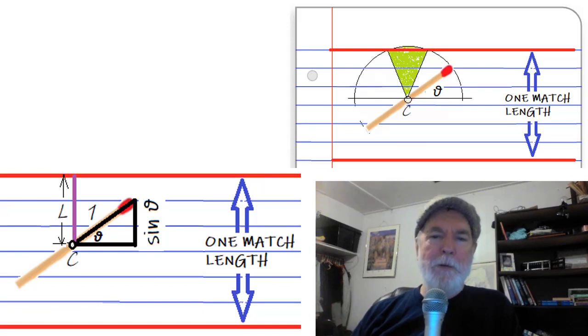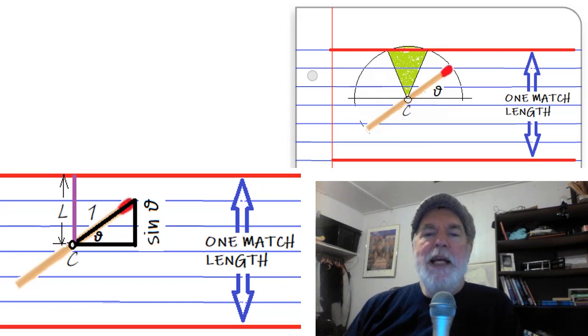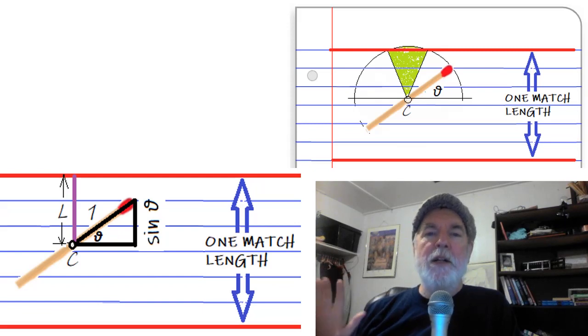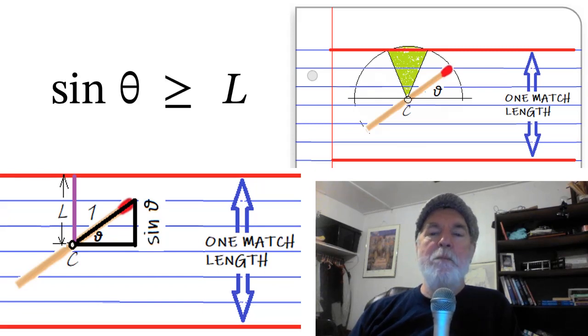Now for a semicircle, theta can be anywhere between zero and pi. Okay, so now there we have our pi snuck in there. The range of values that theta can take without a hit depends on L. Our unit length is the radius of the semicircle, and a hit corresponds to sine theta being greater than or equal to L.